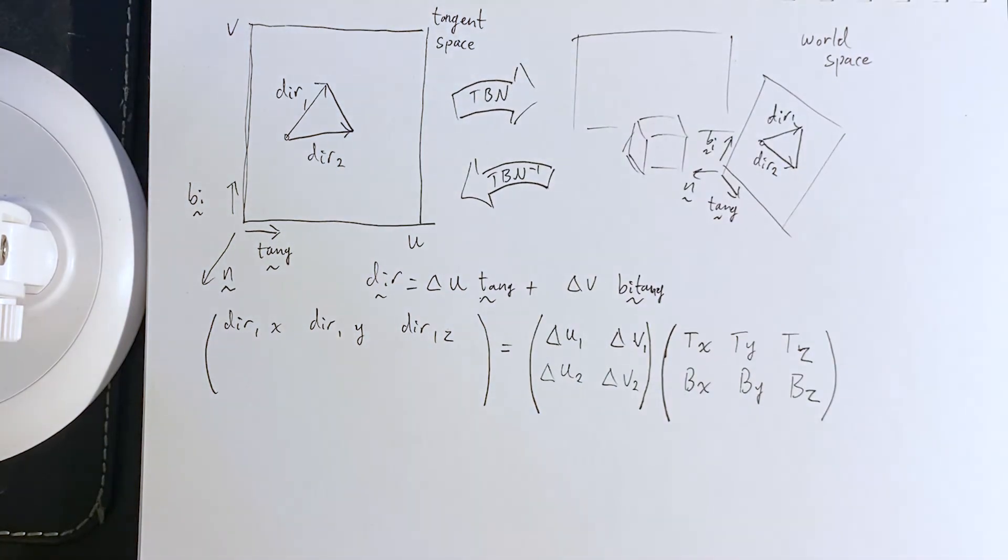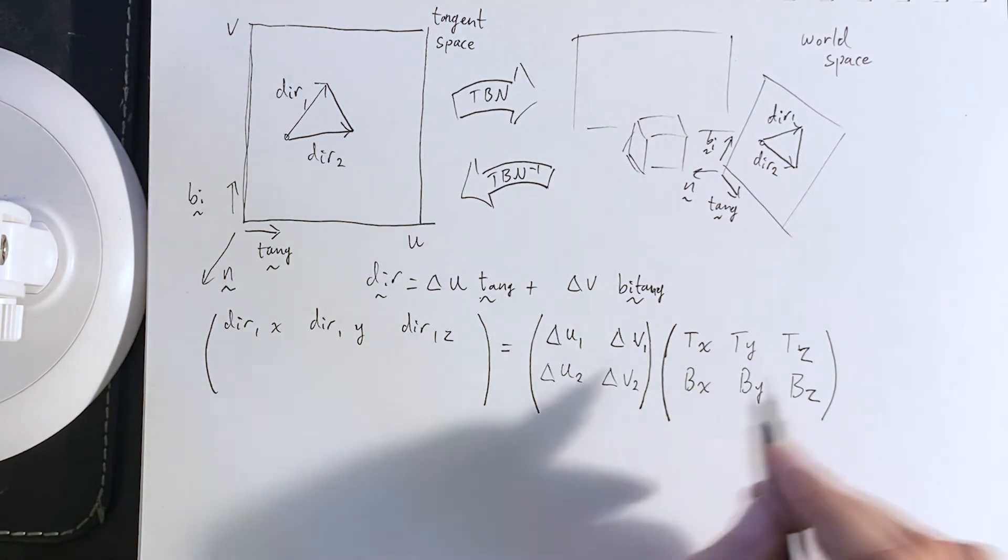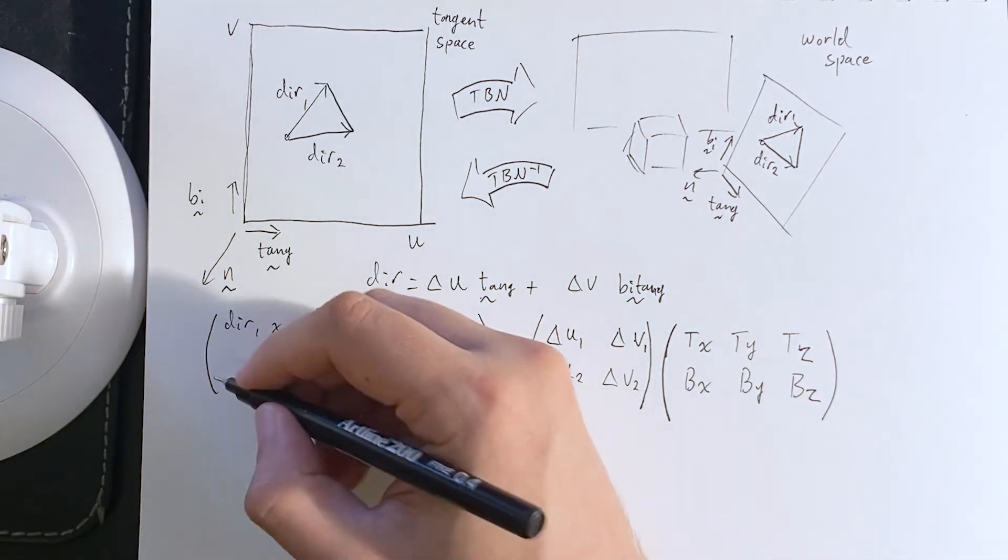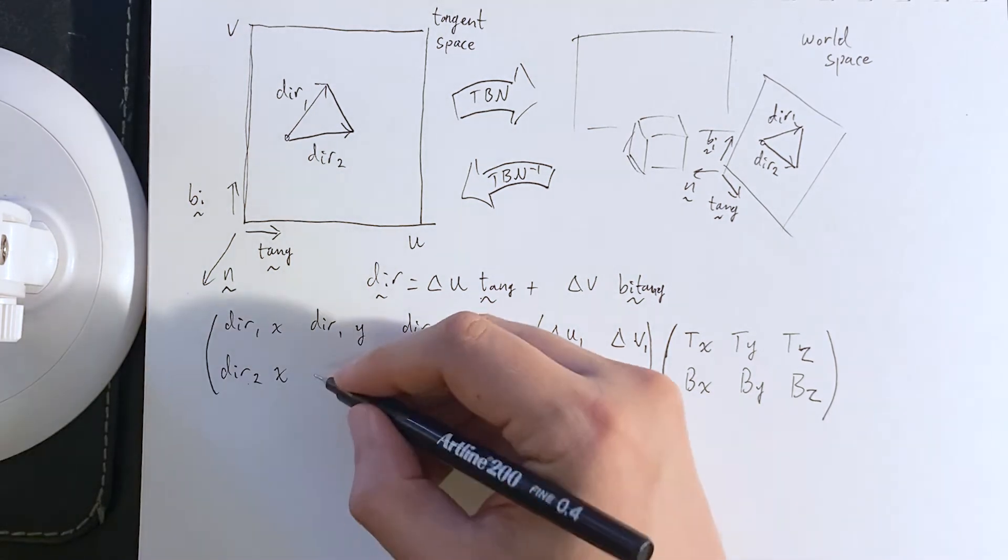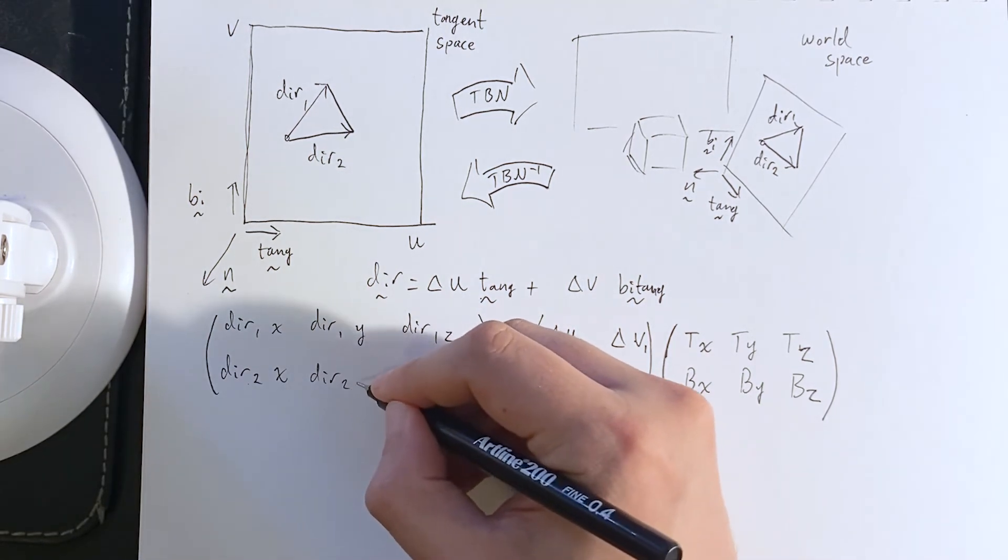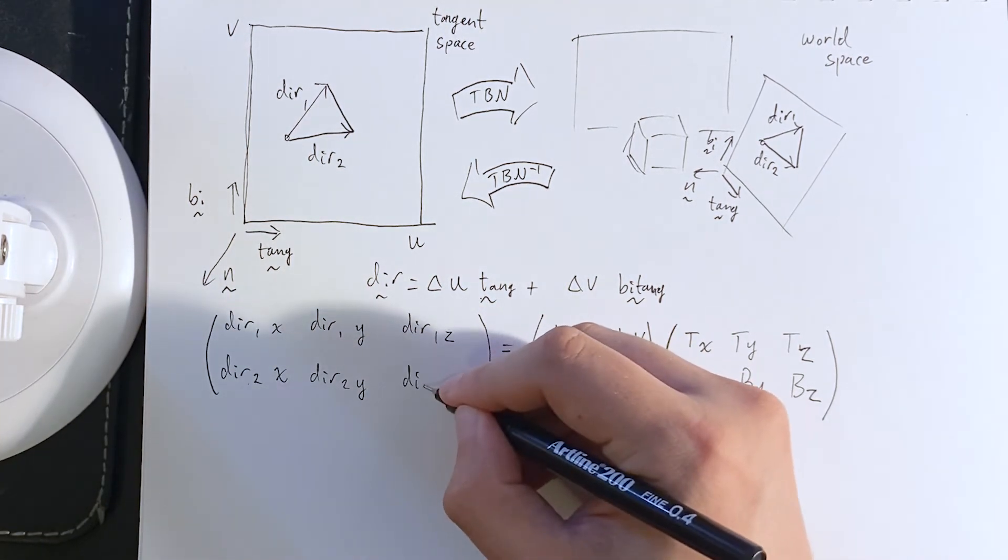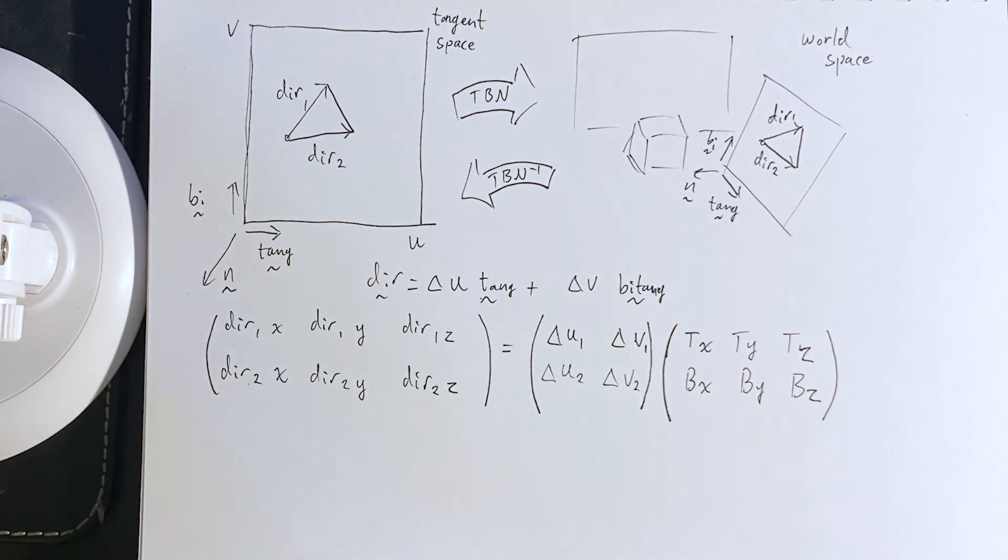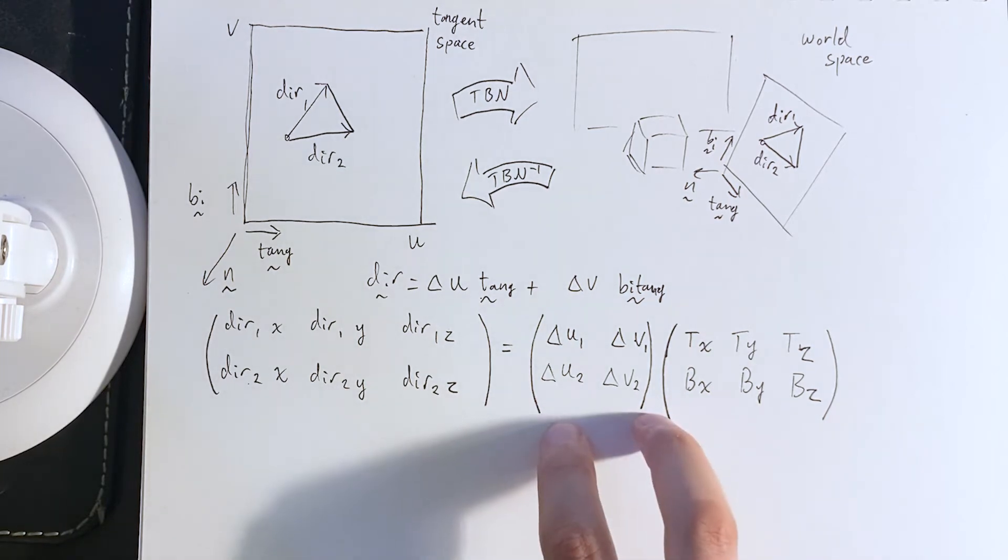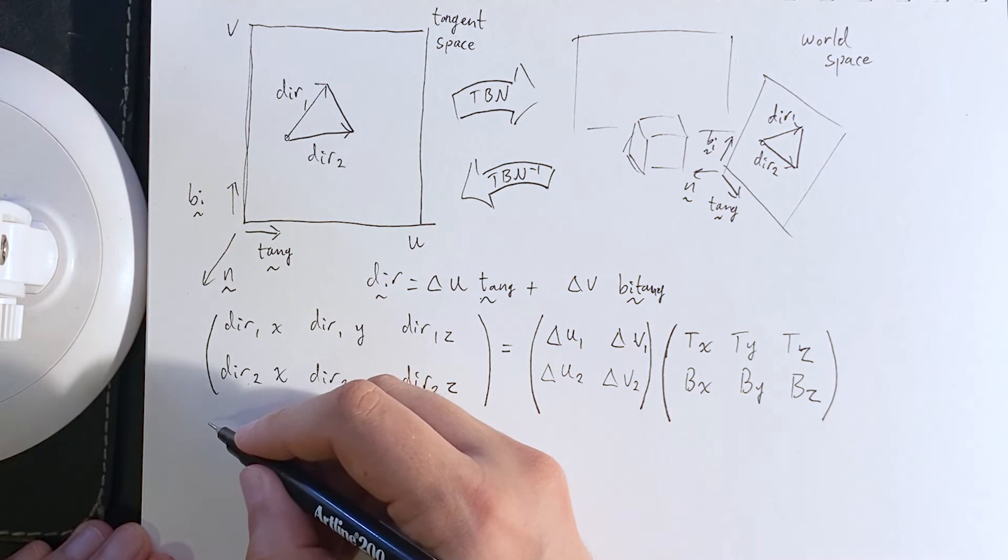Because remember, at this point, this mathematically is true, but we don't know the tangent and bitangent, and so we need to rearrange. Okay. So, no problem. Okay. Now, this matrix here is invertible, and so we can just apply that inverse.